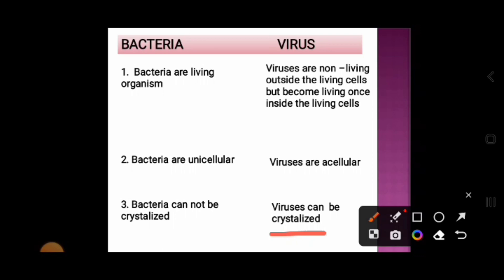The first virus that was crystallized was the tobacco mosaic virus, that is the TMV — T for tobacco, M for mosaic, V for virus. This is the TMV, or the tobacco mosaic virus, which was the first virus to be crystallized.